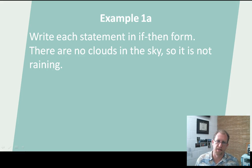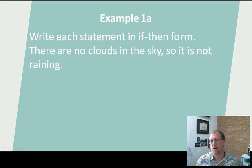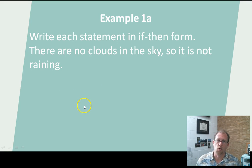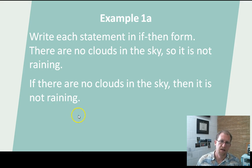Let's take a statement that is not a perfect if-then and write it as an if-then. There are no clouds in the sky so it is not raining — that's not really an if-then yet. We need to massage it a little bit. So let's identify the hypothesis: there are no clouds in the sky. And the conclusion: it's not raining. So rather than saying there are no clouds in the sky so it is not raining, let's say if there are no clouds in the sky, then it is not raining.